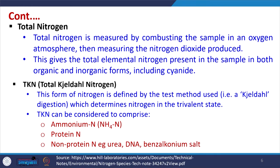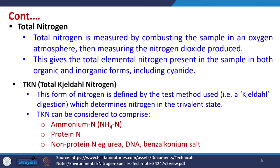Total nitrogen is measured in wastewater from fertilizer or any other industry by combusting the sample in an oxygen atmosphere and then measuring the nitrogen dioxide produced. By back-calculation we can find out the total nitrogen present in the water. This method gives the total elemental nitrogen present in the sample in both organic and inorganic form, including cyanide.